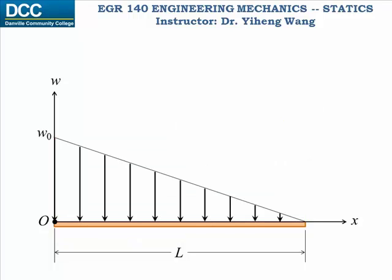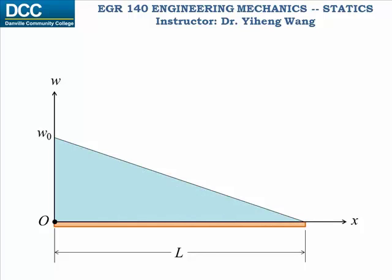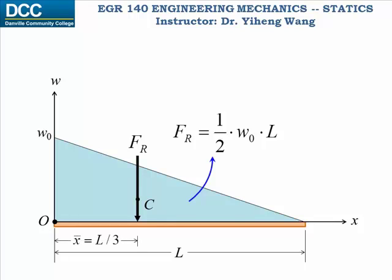Another situation is when the load intensity function W follows a linear distribution, varying from, say, W zero to zero across the length of the board. The resultant force equals to the area of the triangle, half of W zero times L, and it locates at point C, the centroid, that is one third distance from the base of the triangle, with x bar being one third of L.